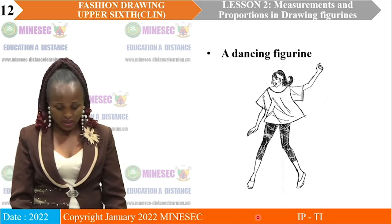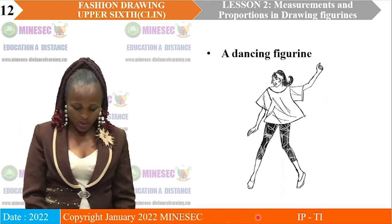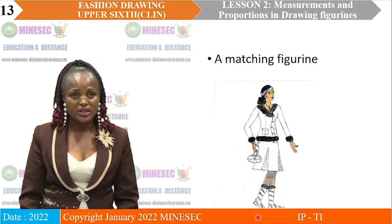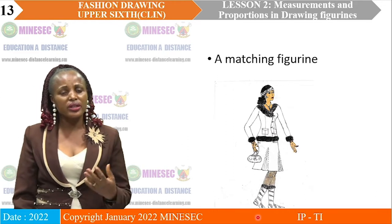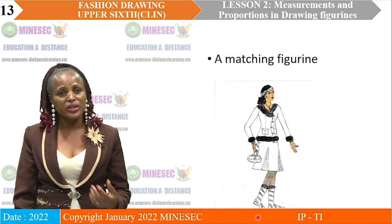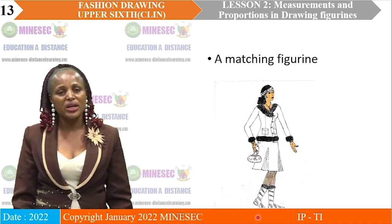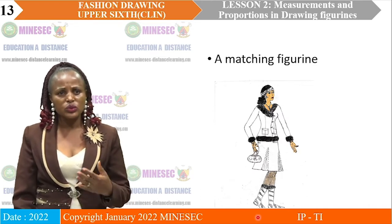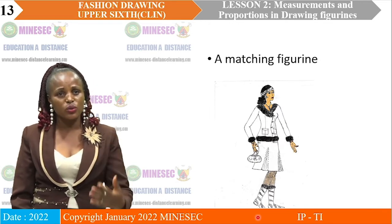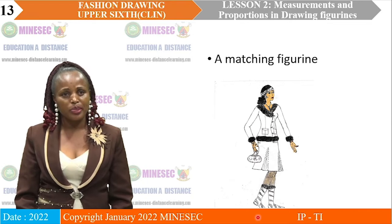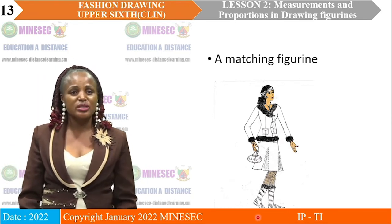You can draw that dancing figurine and dress it according to how the attire will be presentable. You also have a marching figurine. During the 11th February and the 20th May, some of you are always opportune to go to the field to do the march past. When you are marching, you can also draw a figurine which is marching. Here on the board, you will see how a figurine is marching.